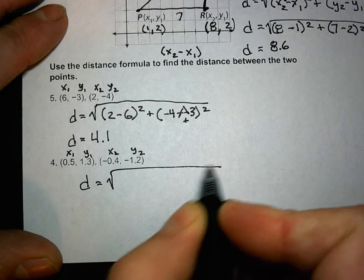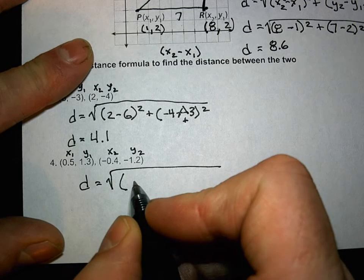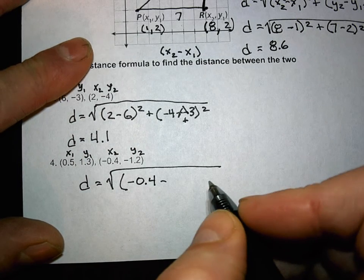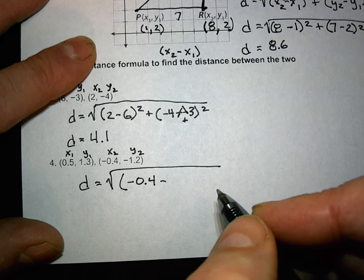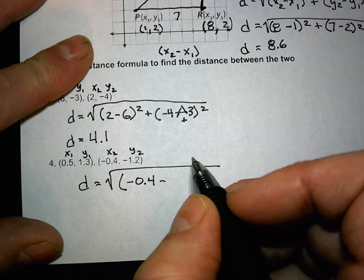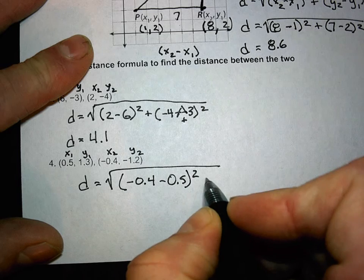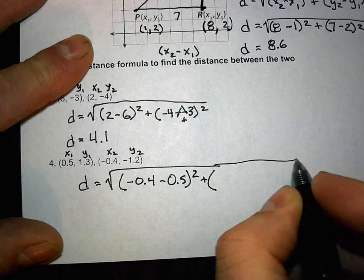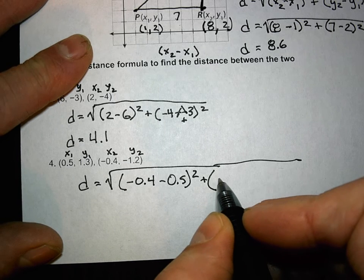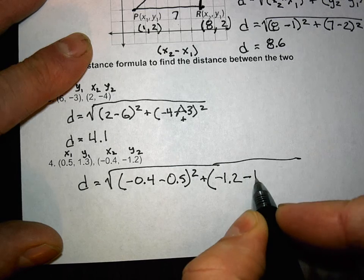So what does d equal? d equals the square root of x sub 2. What's x sub 2? Negative 0.4. x sub 2 is negative 0.4 minus x sub 1. Those of you working it and not writing it down, you're doing yourself a disfavor. So what's x sub 1? John, what's x sub 1? 0.5. Remember, that's squared. x sub 2 plus y sub 2, which is, Gavin, what's y sub 2? Negative 1.2. Minus y sub 1? 1.3. Good job. Squared, right?